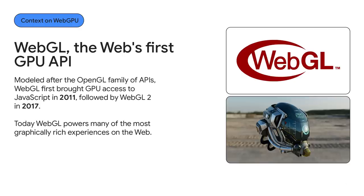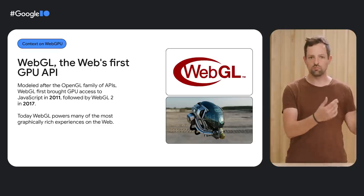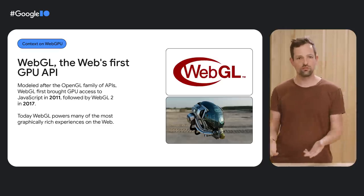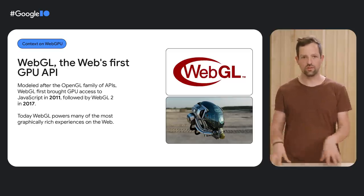In 2011, WebGL came out, which allows web applications to take advantage of GPUs. WebGL has enabled amazing experiences on the web — from Google Earth, to interactive music videos, to 3D real estate walkthroughs, and more. WebGL was based on the OpenGL family of APIs, first developed in 1992. And you can imagine that GPU hardware has evolved significantly since that time.